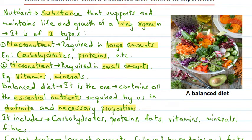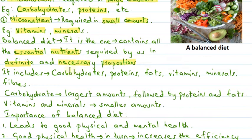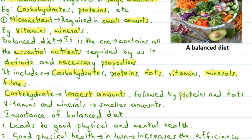A balanced diet includes nutrients like carbohydrates, proteins, fats, vitamins, minerals, and fibers. Fibers are not nutrients but are required for proper digestion of food. Carbohydrates are required in the largest amounts, followed by proteins and fats. Vitamins and minerals are required in smaller amounts by our bodies.